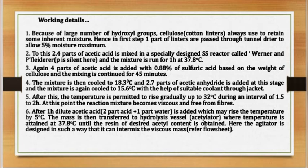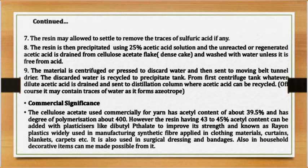Step six: after one hour, dilute acetic acid (2 parts acid plus 1 part water) is added, which may raise the temperature by 5 degrees Celsius. The mass is then transferred to a hydrolysis vessel — the acetylator — where temperature is maintained at 37.8 degrees Celsius until the desired acetyl content is obtained. The agitator is designed to intermix the viscous mass. Step seven: the resin may be allowed to settle to remove any traces of sulfuric acid. Step eight: the resin is then precipitated using 25% acetic acid solution, and unreacted or regenerated acetic acid is drained from the cellulose acetate cake and washed with water until free from acid.